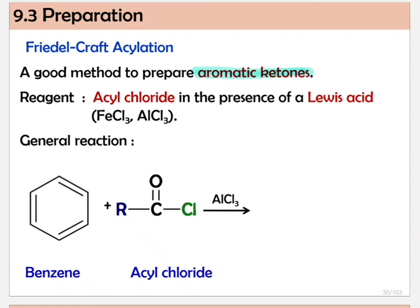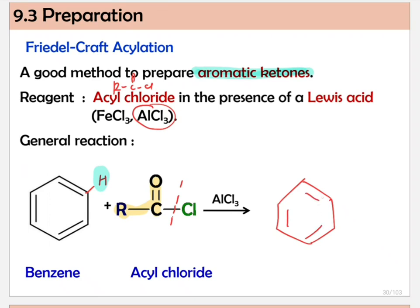The reagent is acyl chloride — R with C=O and Cl — in the presence of a Lewis acid, specifically AlCl3. For the general reaction, benzene reacts with acyl chloride. One hydrogen on the benzene is replaced. The acyl group — after breaking from chloride — enters the ring. We copy back the benzene ring with its double bonds, the hydrogen leaves, and this carbon bonds to the benzene, giving us an aromatic ketone.